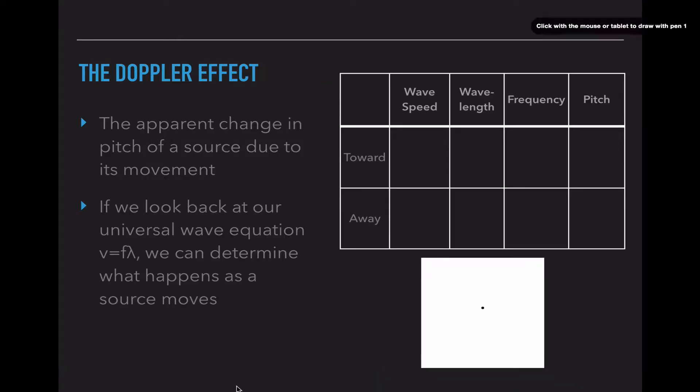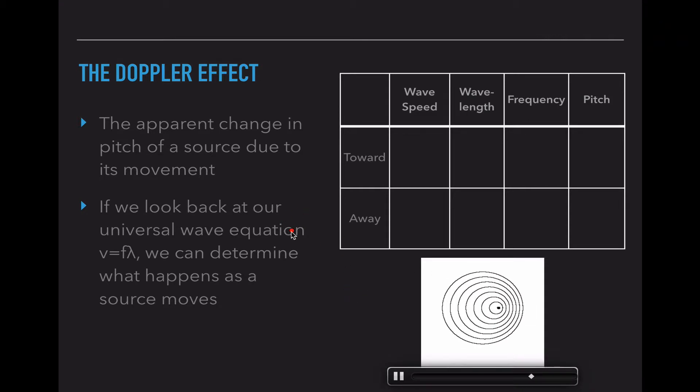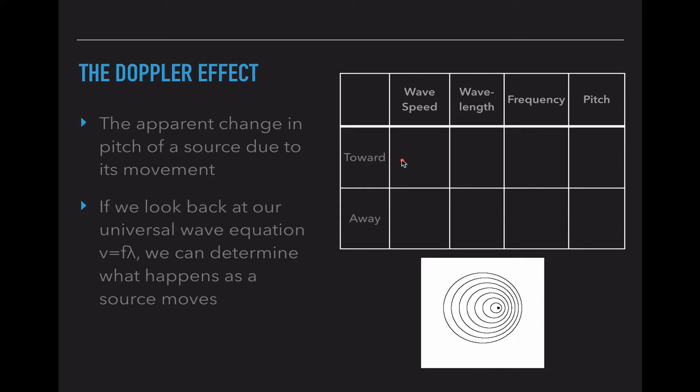So what we're going to do is fill in this table. Notice, I still have this diagram showing the motion of that particle. And as I fill in the table, we're going to look at that diagram. So if we look back to our universal wave equation, v equals f times lambda, we can determine what happens as that source moves. The wave speed is going to be the same in both scenarios, moving towards you or away from you, because the medium is not changing.